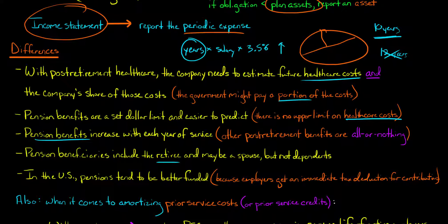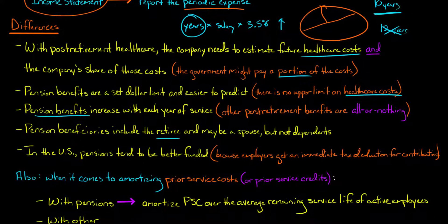In the United States, pensions tend to be better funded than other post-retirement benefit plans like healthcare — and healthcare is the most common type of other post-retirement benefit. The reason being: if an employer makes a contribution to plan assets for a pension plan, they get an immediate tax deduction for that contribution. However, when it comes to other post-retirement benefit plans like healthcare, the employer does not get an immediate tax deduction. They only get the deduction in the future when the retiree actually receives the benefits. So companies don't have an incentive to properly fund the plan, and you might see a post-retirement healthcare plan that is unfunded or has very little plan assets.